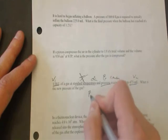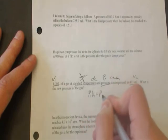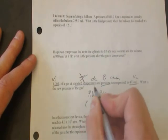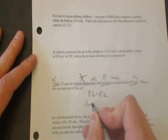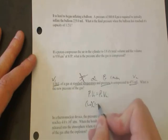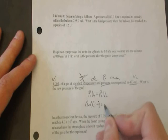So we'll use P1V1 equals P2V2. And we'll have our first pressure is standard pressure, which is 1. Our first volume is 1. Our second pressure is what we're trying to solve for.